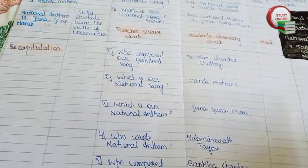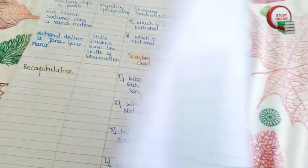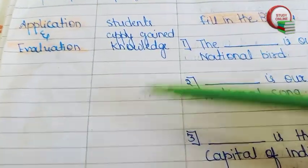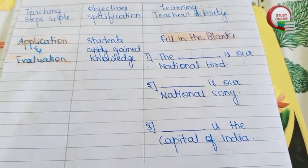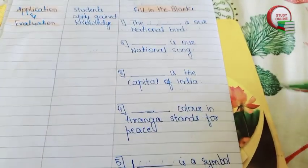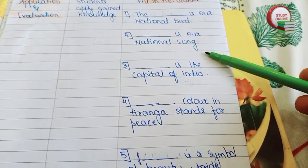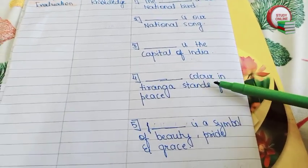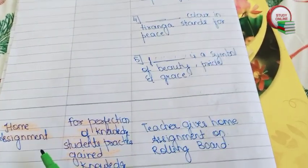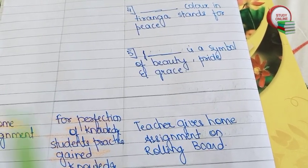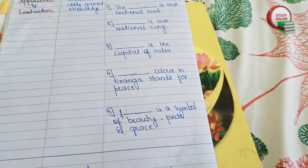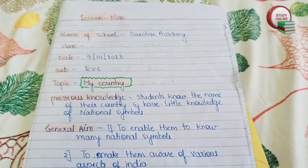Now let's turn the page to see the last part of our lesson plan — Application and Evaluation. We can ask up to five questions. Here are fill-in-the-blank questions: 'Blank is our national bird. Blank is our national song. Blank is the capital of India. Blank color in Tiranga stands for peace. Blank is a symbol of beauty, pride, and grace.' For the Home Assignment, the teacher gives students work on the rolling board to perfect their knowledge.